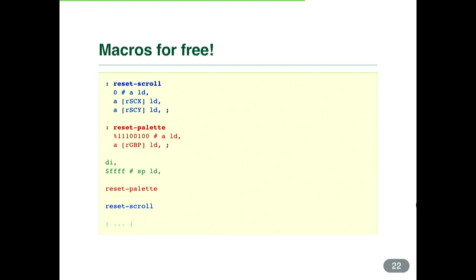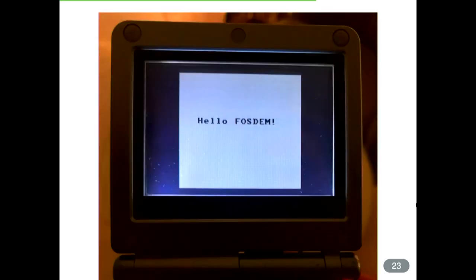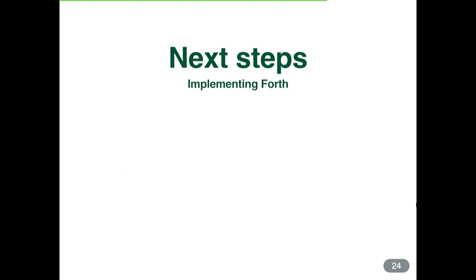Now we have a program we can edit without understanding what offset or bytes to change, and we can produce a new version of our Hello World ROM with arbitrary text. But this is just an assembler — we want to take it further and implement Forth completely for the Game Boy, so you wouldn't have to work with assembler at all.